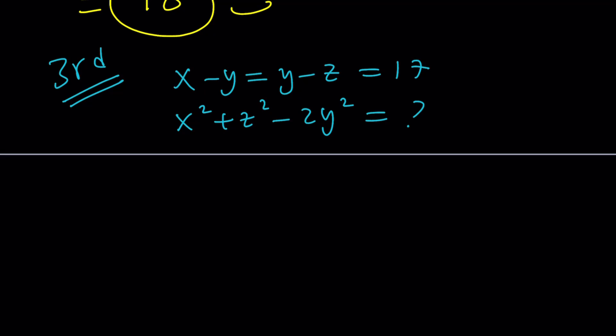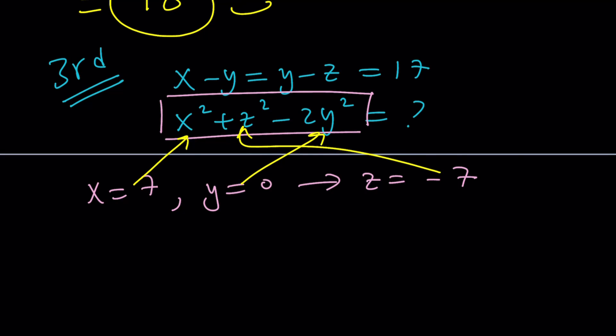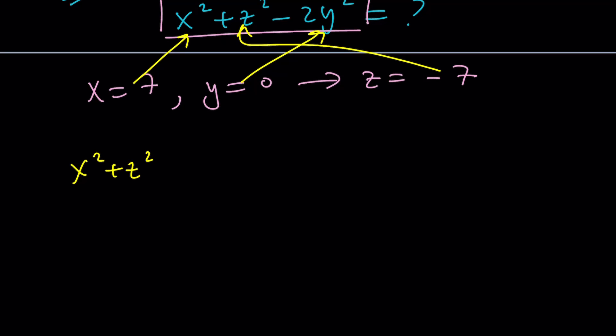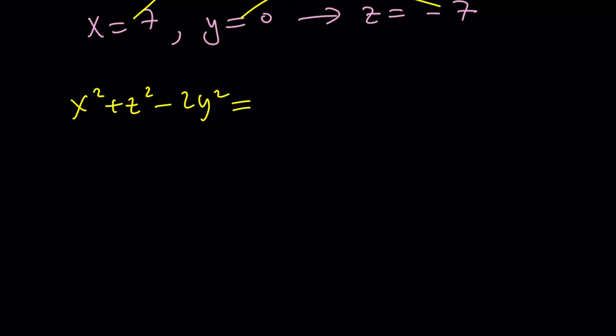We can make up values because the value of this expression should not depend on x, y, z. It's a constant. So let's go ahead and assume that x is 7 and y is 0. Obviously, you can't just make up values for x, y, z at the same time because you have to satisfy the system. x equals 7 and y equals 0 implies that z is equal to negative 7. So what we need to do now is plug this into our equation.